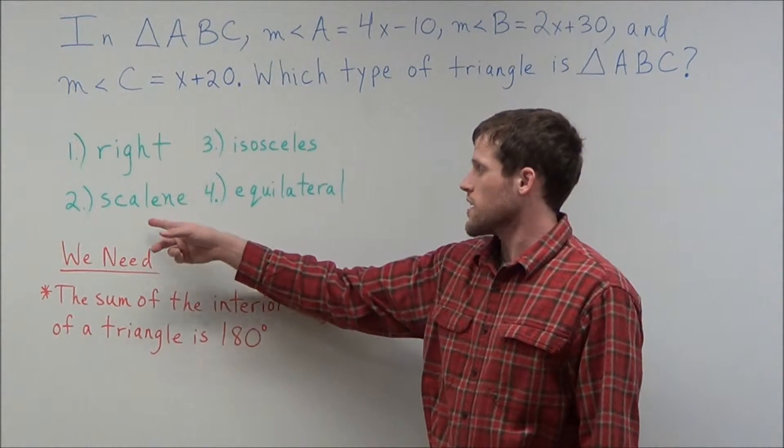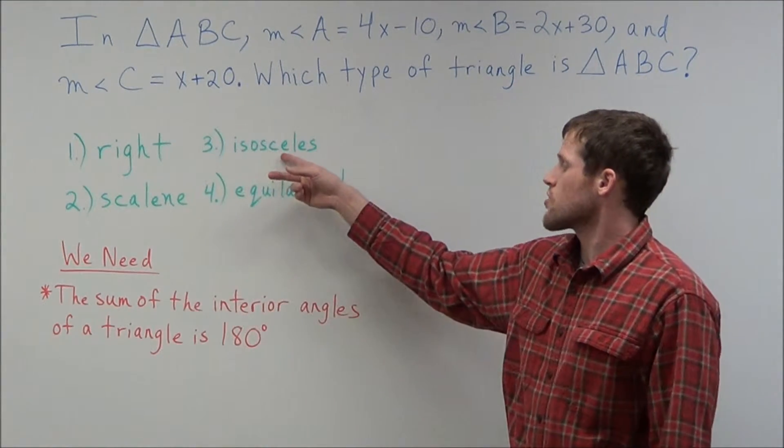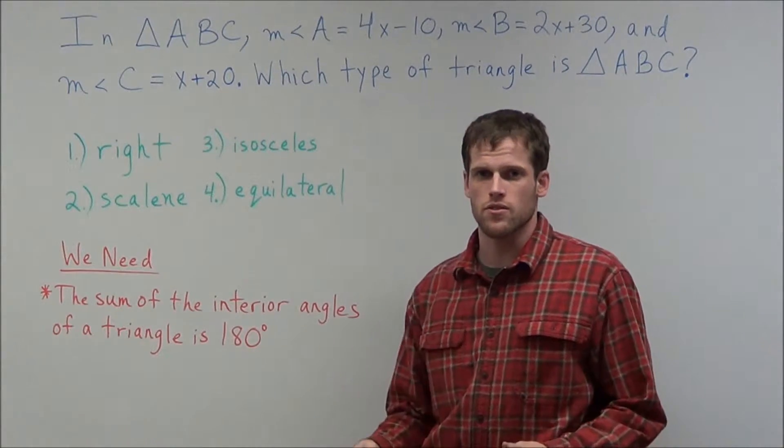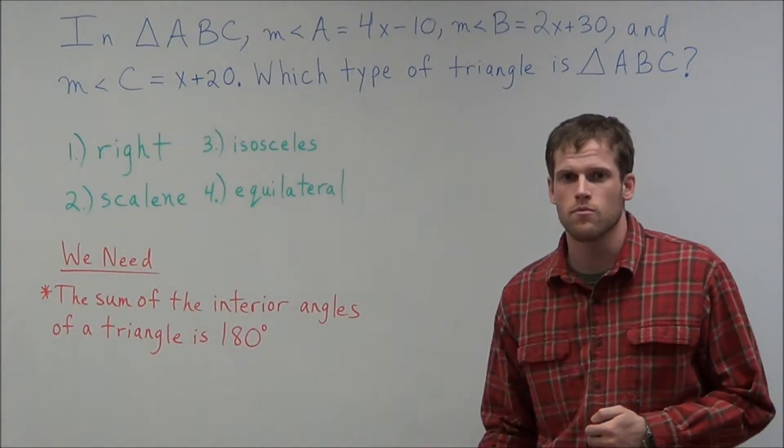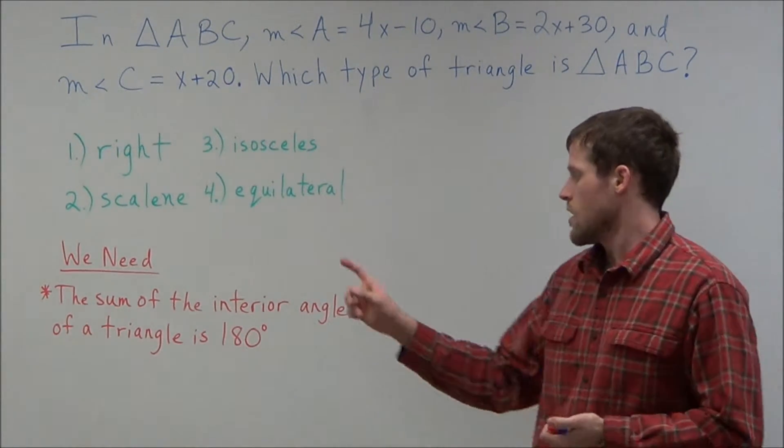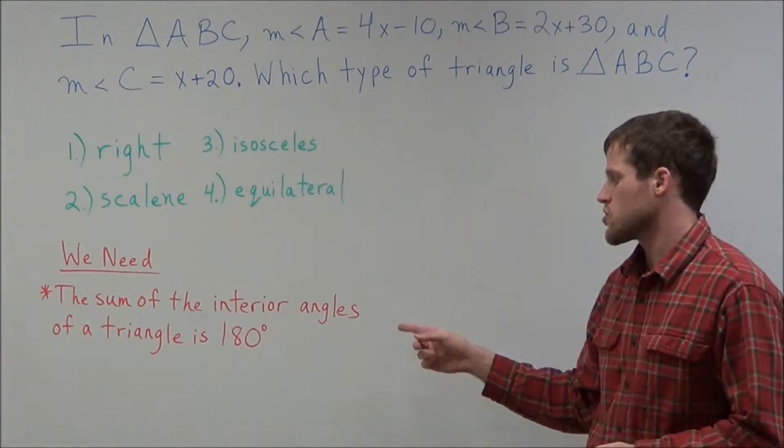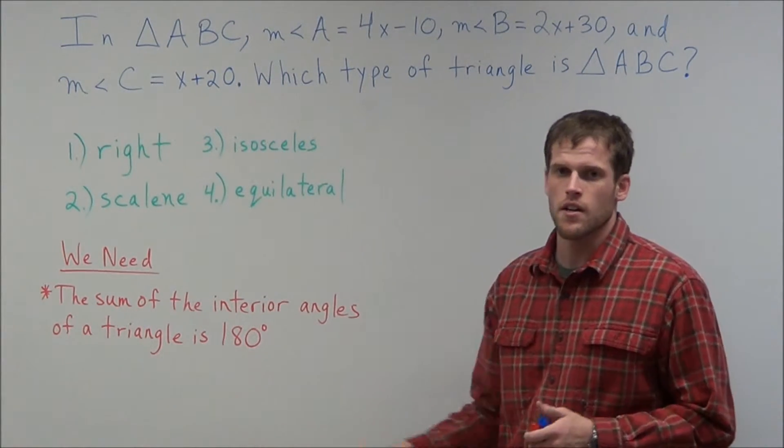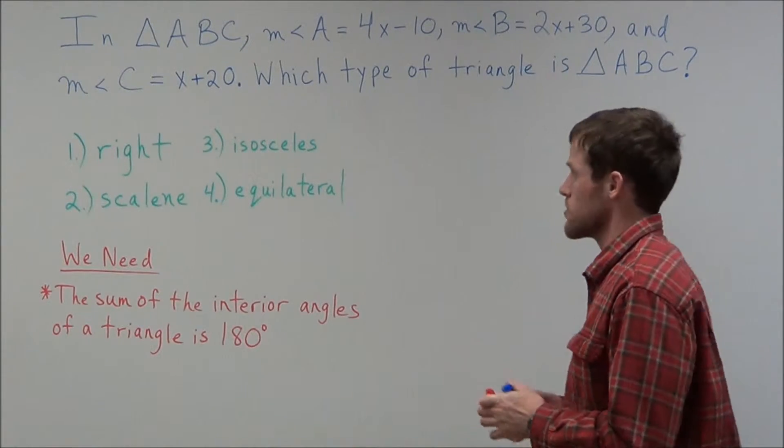And we can choose from: we have a right triangle, a scalene triangle, an isosceles triangle, and an equilateral triangle for our answer choice. So to get through this problem, we want to use the theorem that tells us the sum of the interior angles of a triangle is 180 degrees. This is going to allow us to set up an equation to answer this problem.